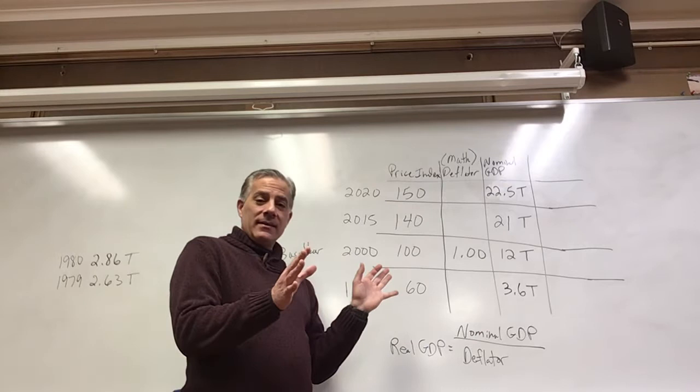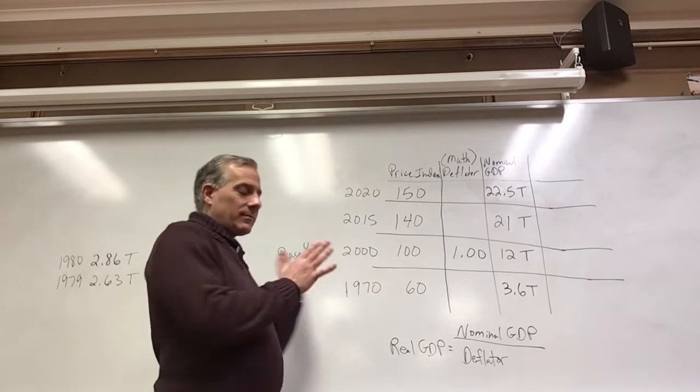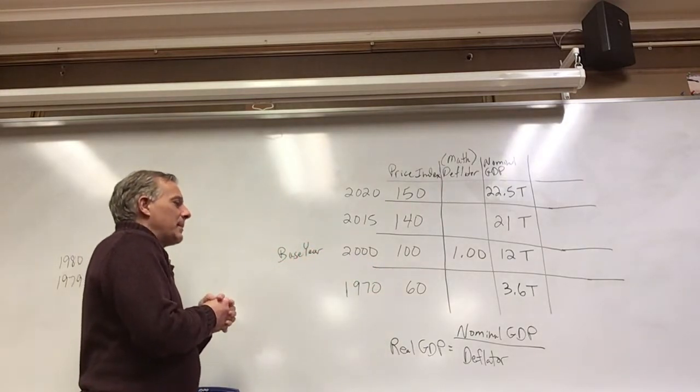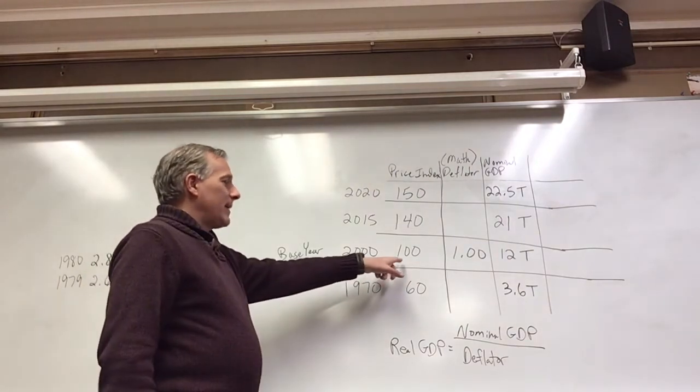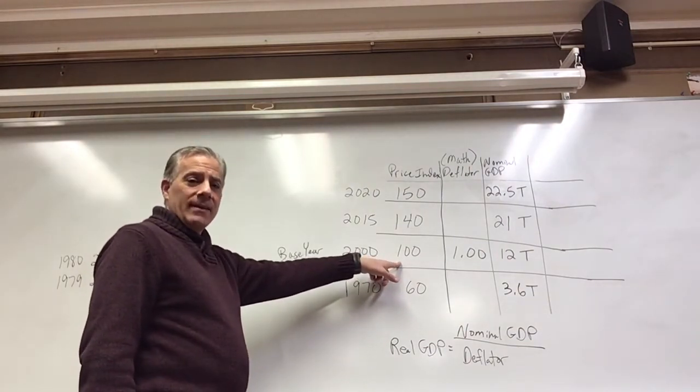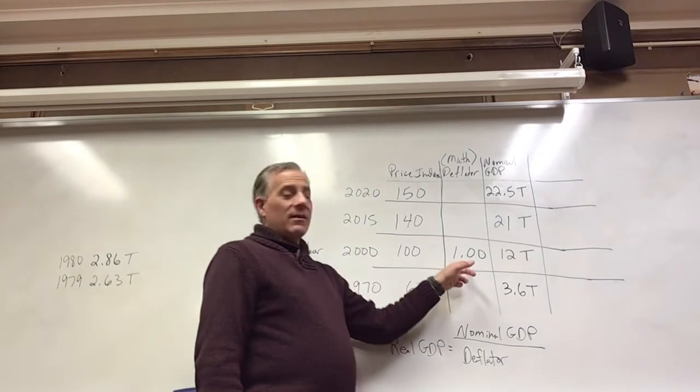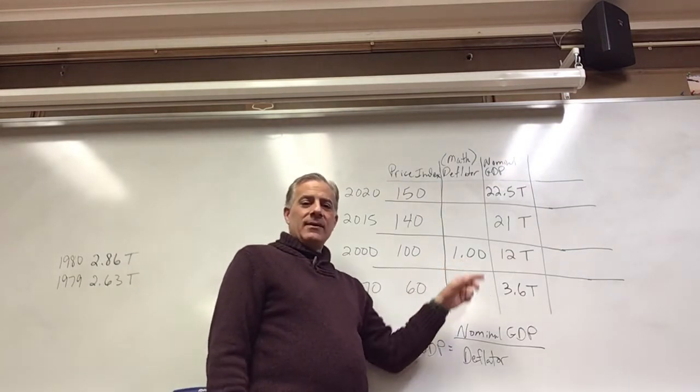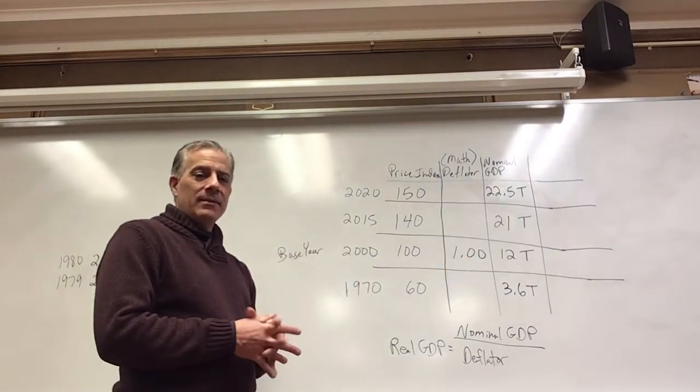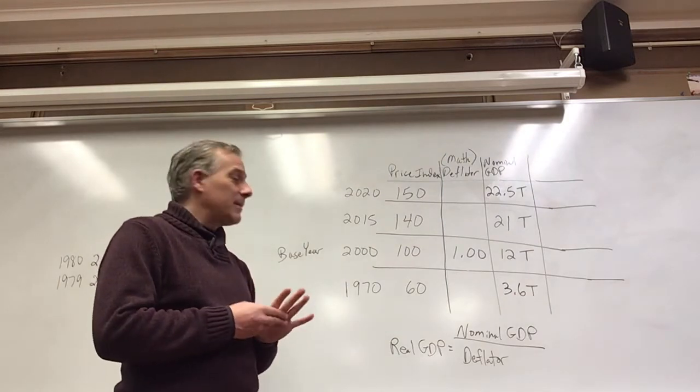You can pick any year as a base year. This is obviously a common one and that price index is 100. And the deflator for that is 1.0, being the identity number, when you multiply or divide by it, you get the same numbers.